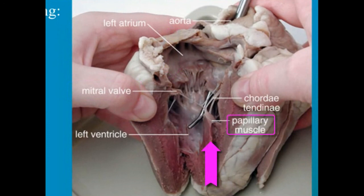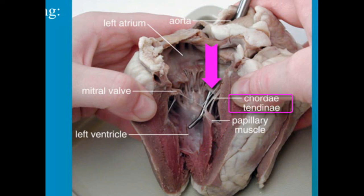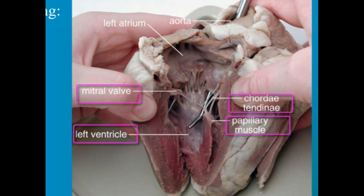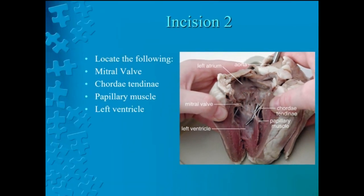The final incision will be through the aorta. Insert a probe into the aorta and observe where it connects to the left ventricle. Make an incision down through the aorta and examine the inside carefully for three small membranous pockets. These form the aortic semilunar valve, which prevents blood from flowing back into the left ventricle. We will pause to make this incision. Locate the semilunar valve and the cusp of the valve.